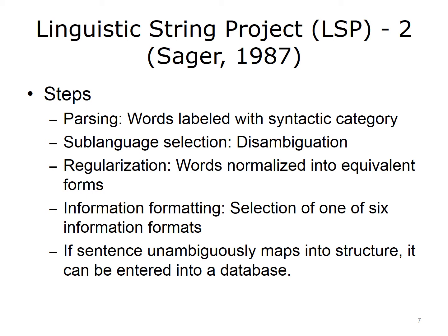The first step was parsing, which consisted of labeling each word with a syntactic category such as verb, noun, etc. The next step was choosing a sublanguage that helped in disambiguating the words and sentences. This was followed by regularization of the language, so the words were normalized into equivalent forms. Finally, there was an information formatting step, where one of the six information formats was selected. If the system unambiguously mapped into one of those formats, it was then entered into a database.